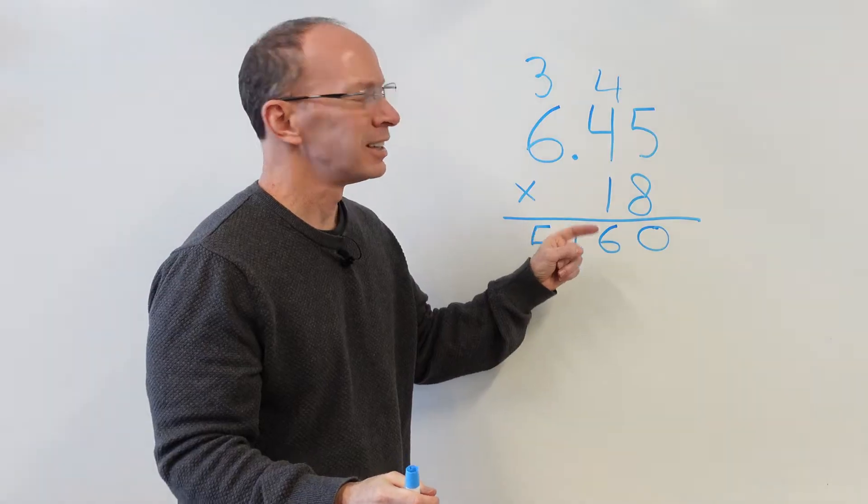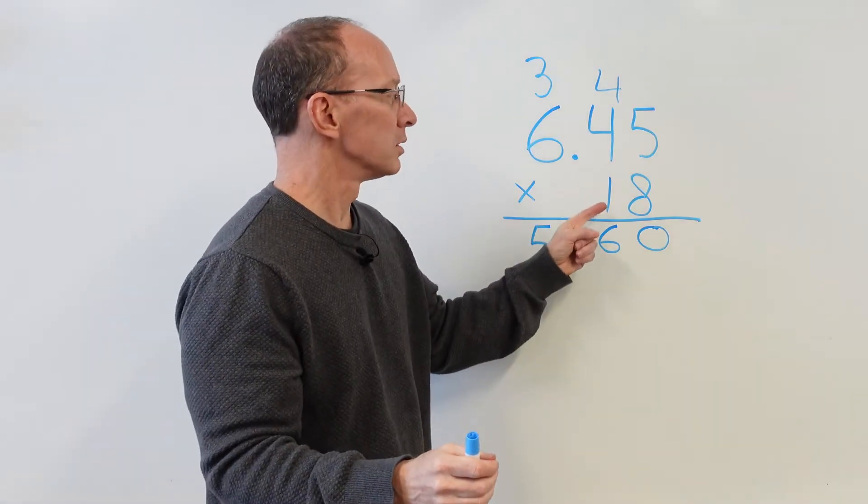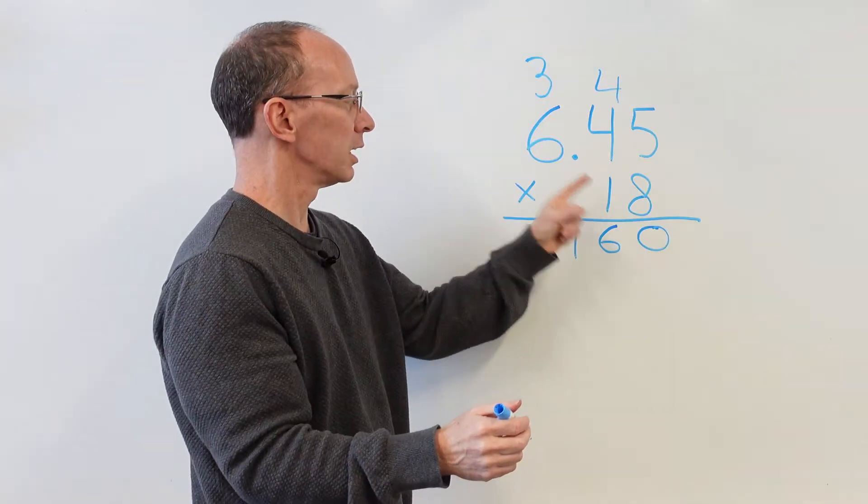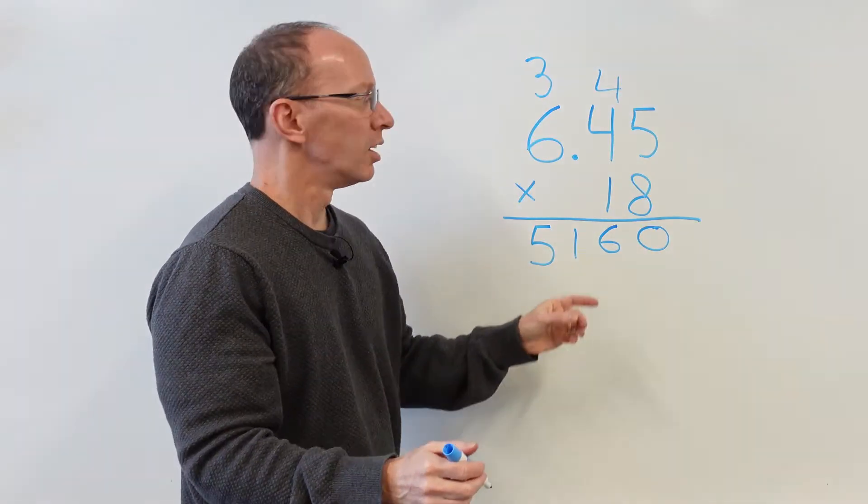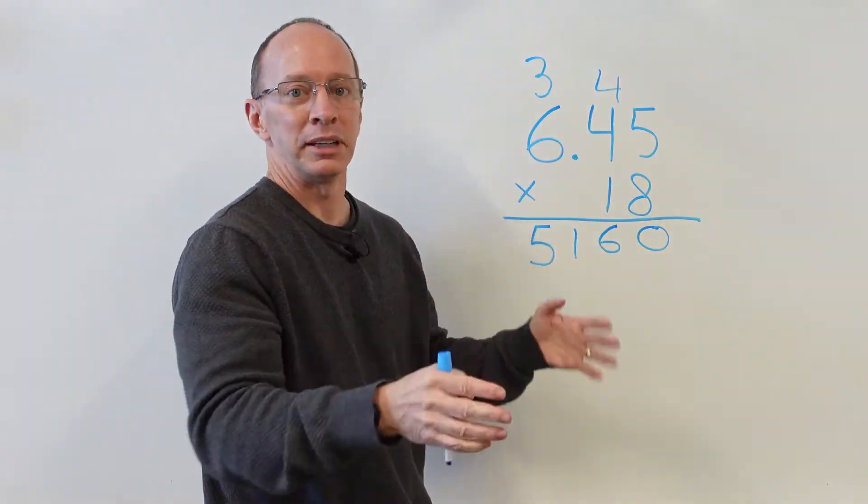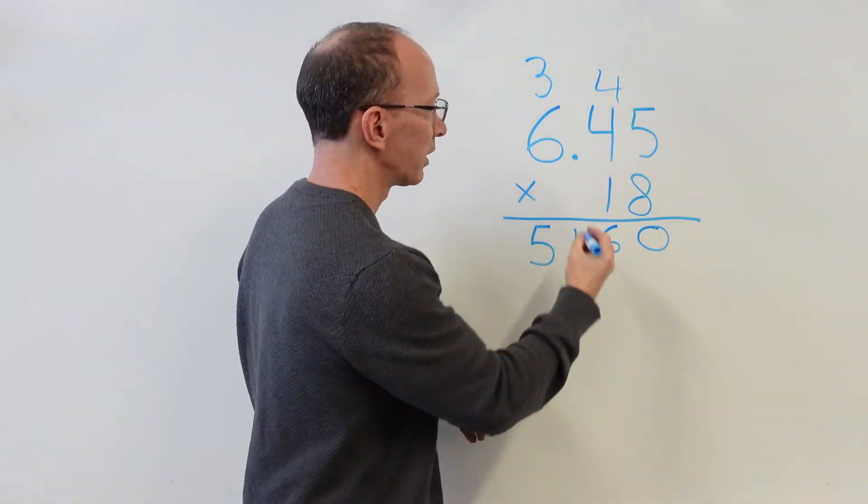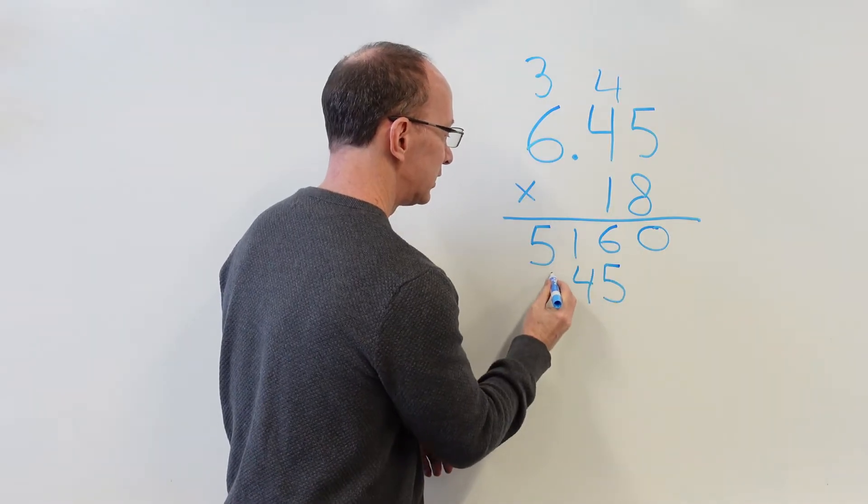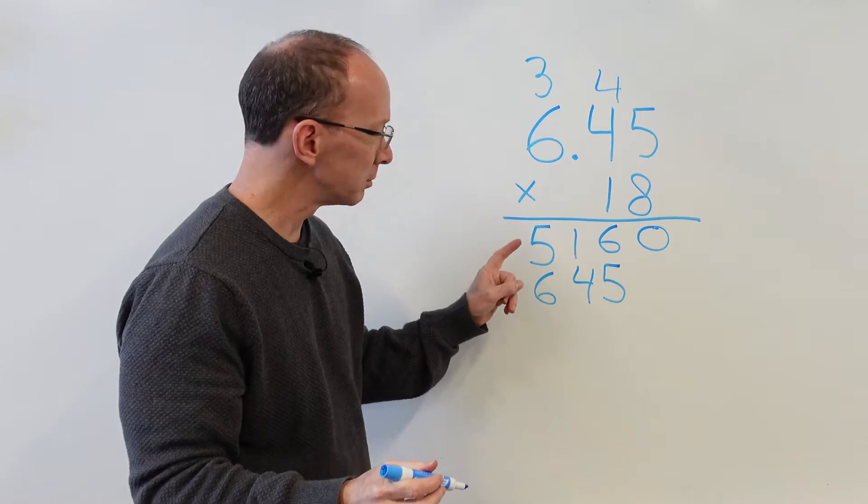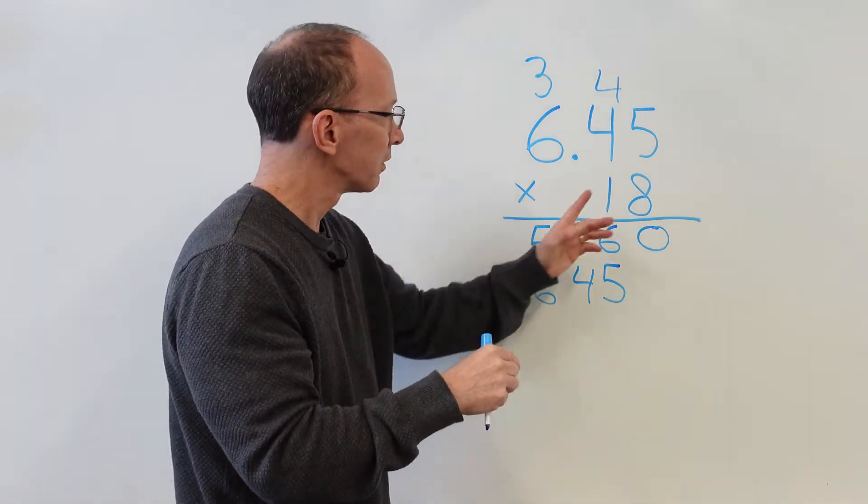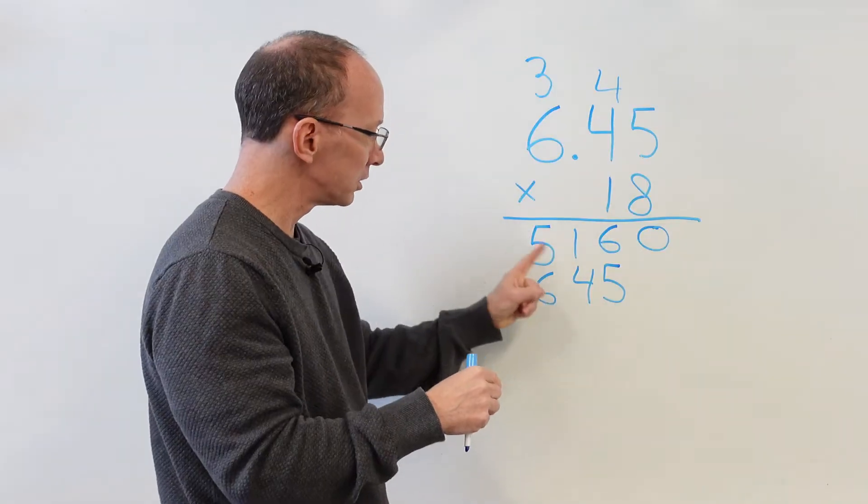Now I do the 1s. Now I could go 1 times 5 is 5 and put the 5 here, 1 times 4 is 4 and put the 4 here, 1 times 6 is 6, put the 6 there. Or I just know that 645 times 1 is going to be 645. So you just put the 5 here, 4 here, 6 here. But always double-check. Sometimes we take these little shortcuts, but always double-check your answer. Looks good.